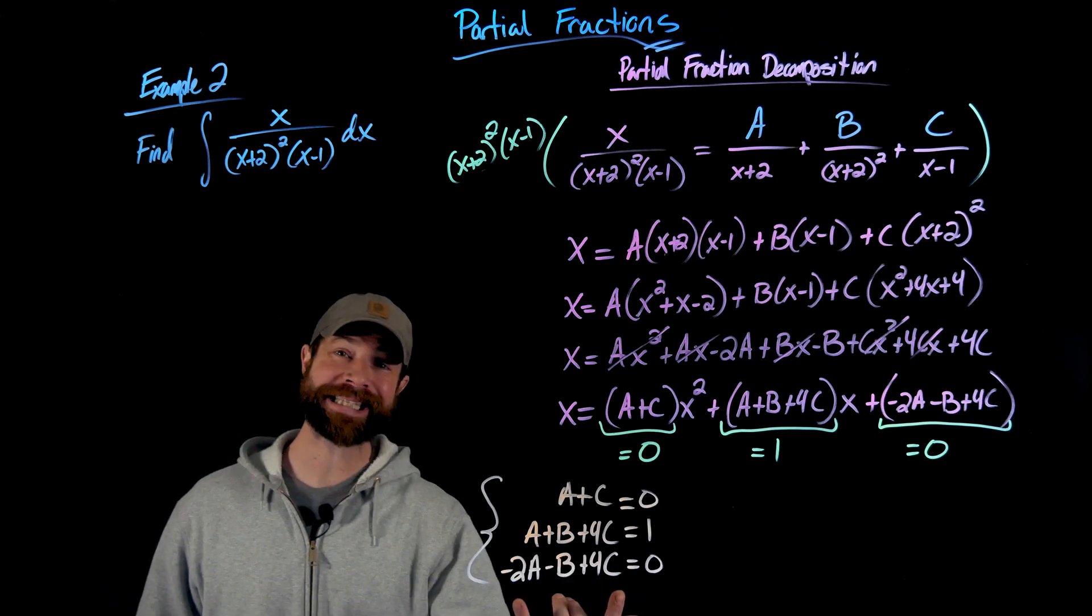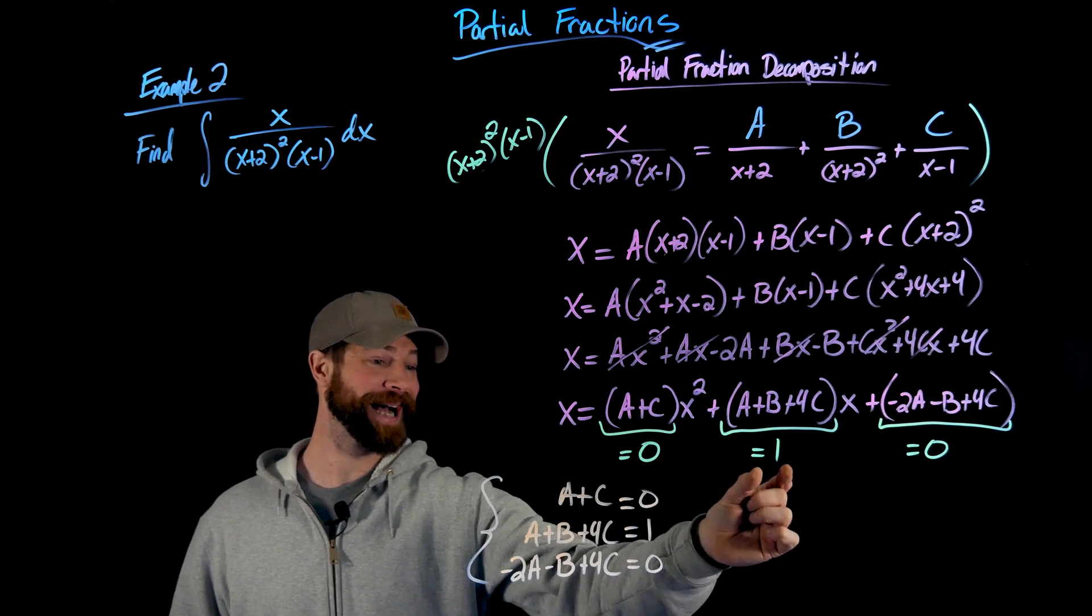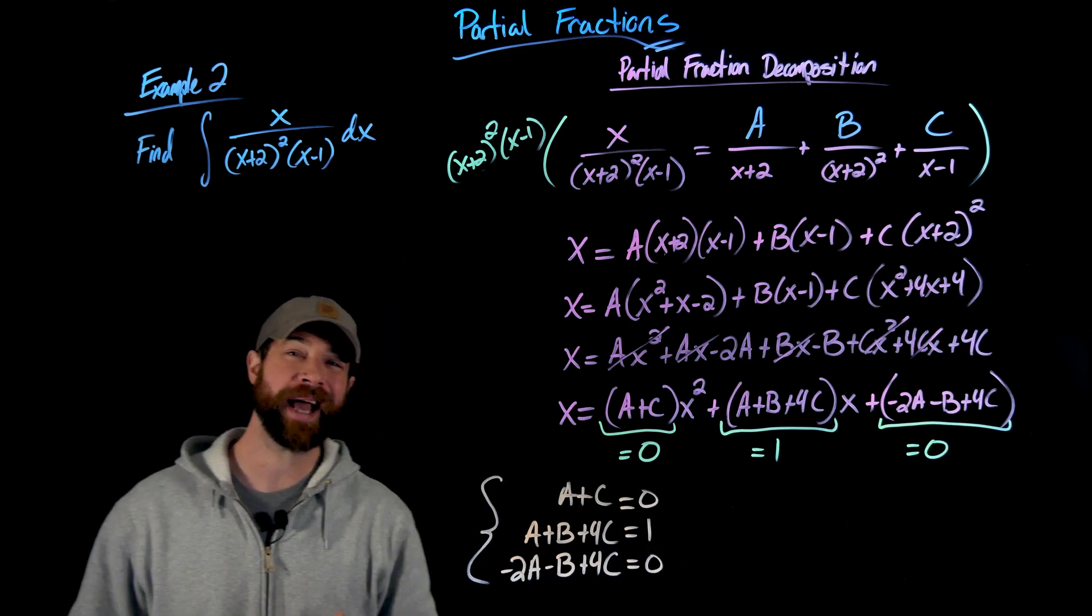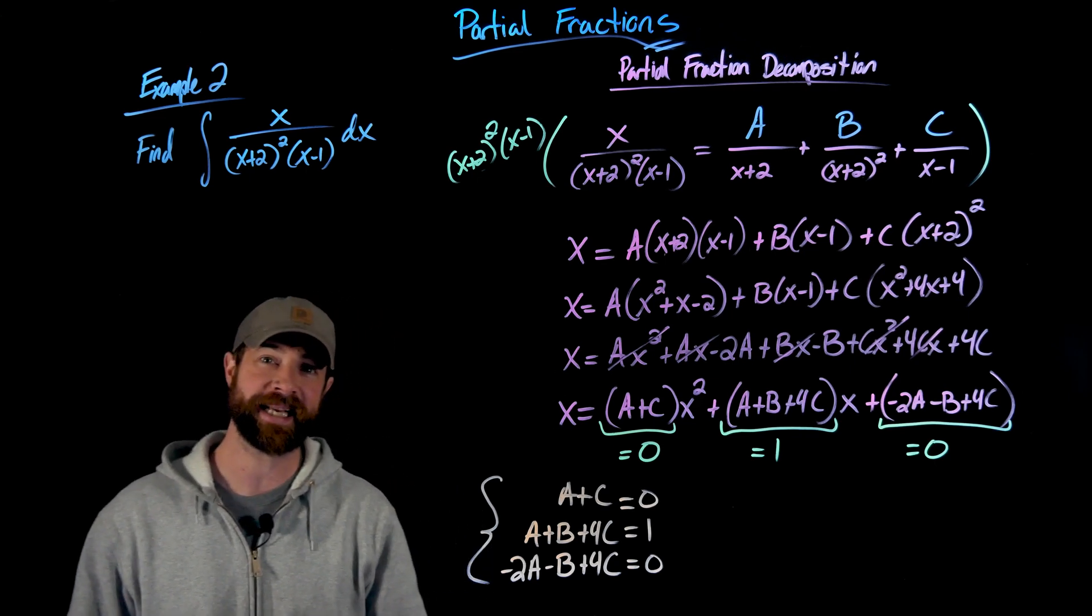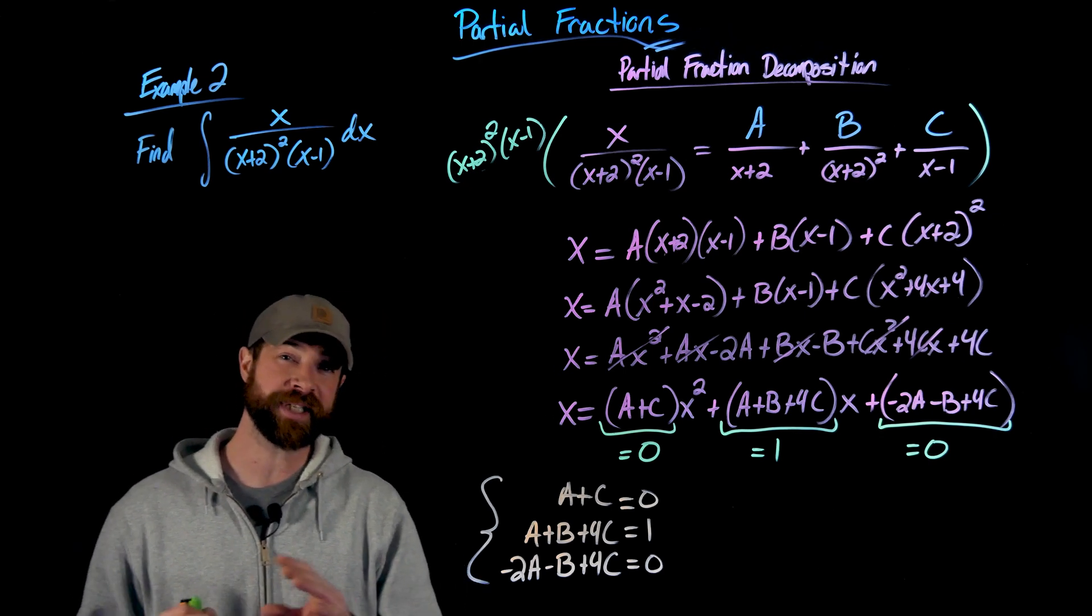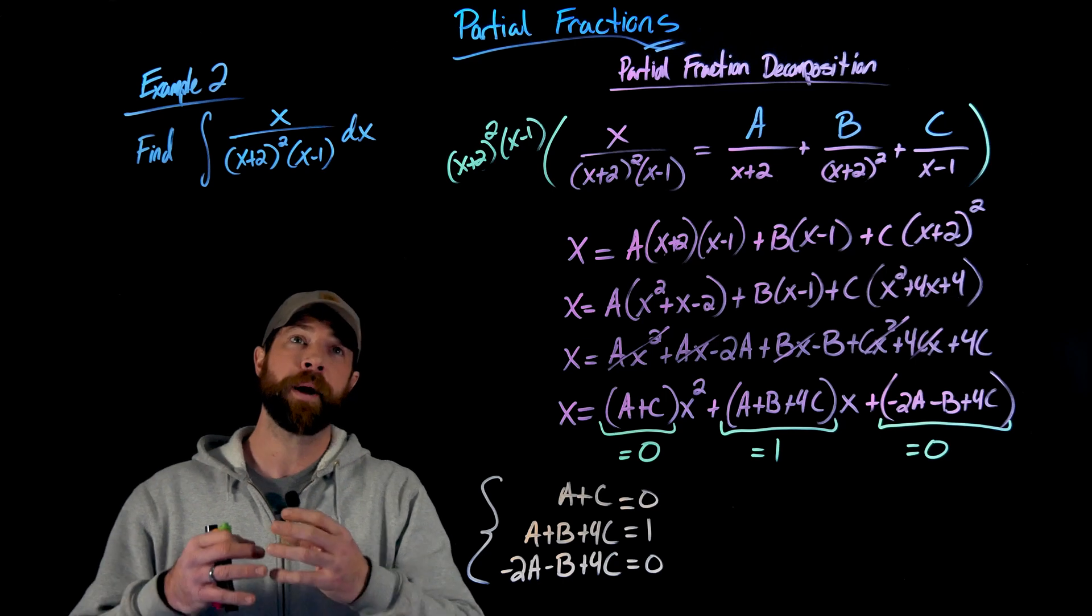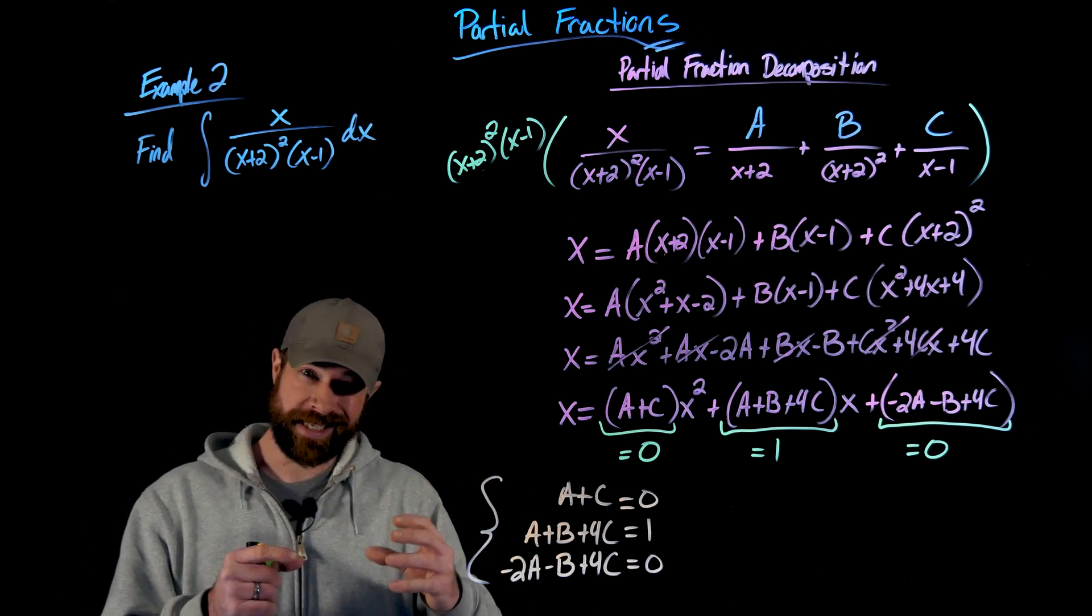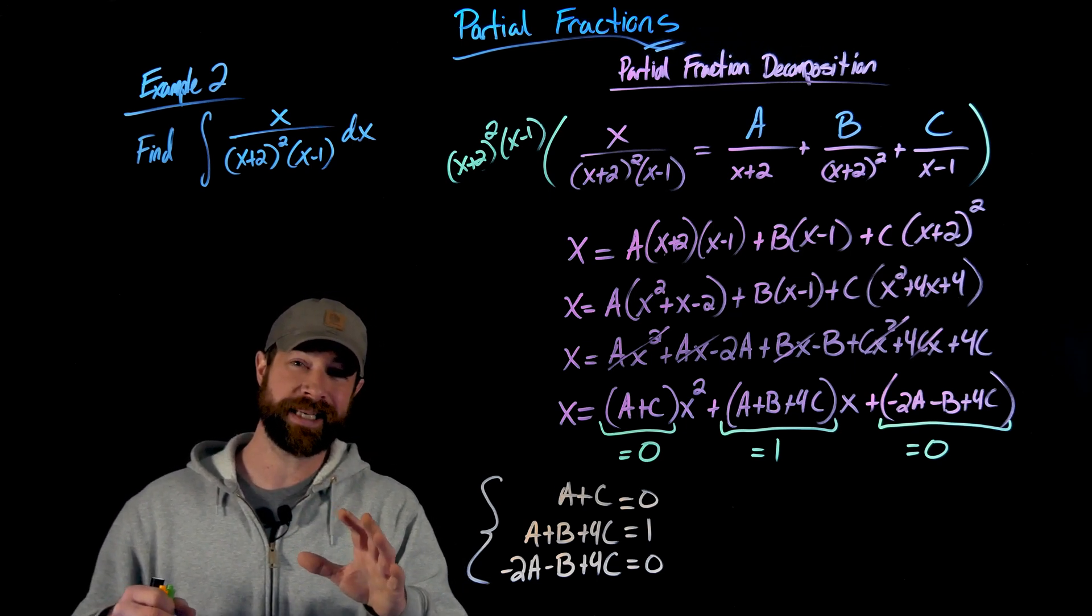So that gives me this linear system right here, where a plus c equals 0, where a plus b plus 4c has to equal 1, and where negative 2a minus b plus 4c needs to equal 0. And again, if you haven't had a lot of work with three or more variable systems, it's not a really big deal. Any of the techniques that you use for two variable systems work here. Substitution, addition, elimination. But just to give you kind of an overview of this, what I do if I have a three variable system is I want to break it down into a two variable system. So I have three variables here, but if I could create a system from this that only has two variables, I can solve that with any of my techniques.